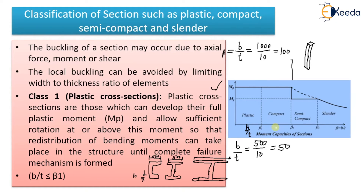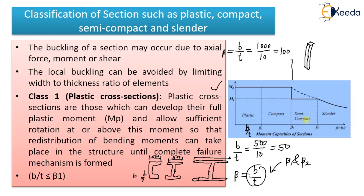If your b/t value lies between beta 1 and beta 2, that means your section is compact. If it lies between beta 2 and beta 3, it is semi-compact. So: if beta is greater than beta 1 but less than beta 2, the section is compact; if greater than beta 2 and less than beta 3, it is semi-compact.